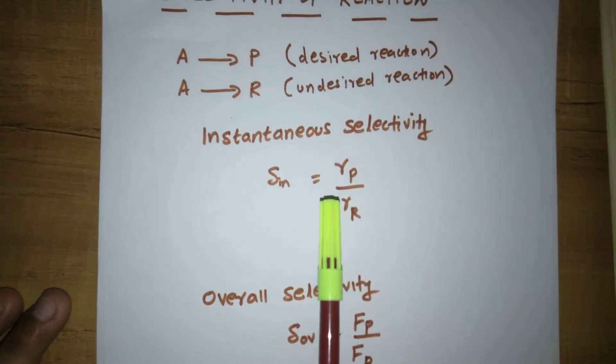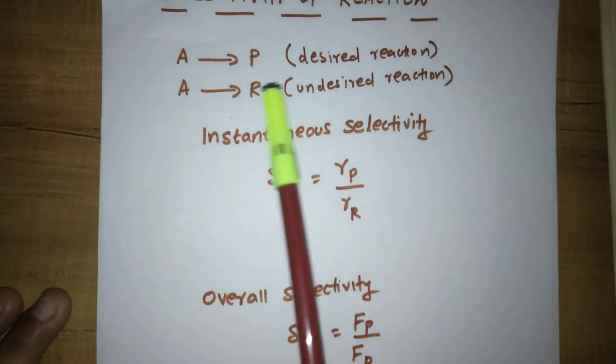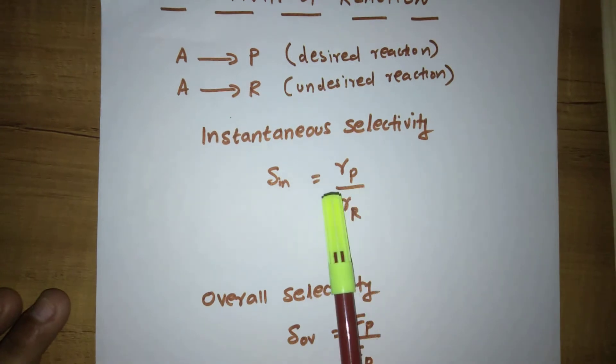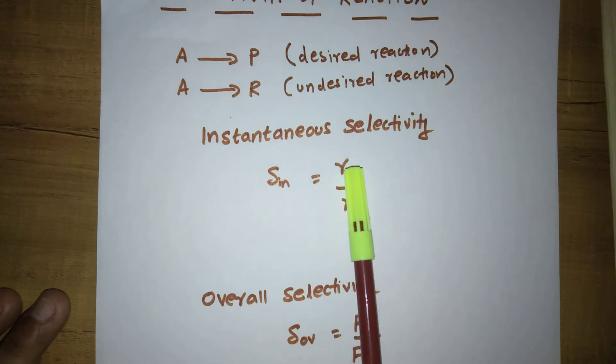It is the ratio between reaction rate of production of desired products to the reaction rate of production of undesired products. P is the desired product, R is the undesired product.